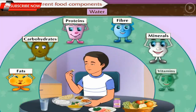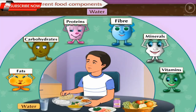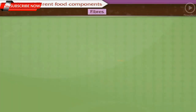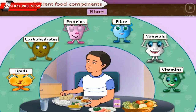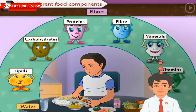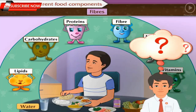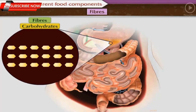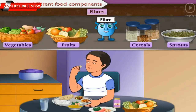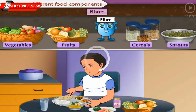Fibers are also an essential nutrient and are carbohydrates, but unlike other carbohydrates, our body cannot digest them. They are very helpful in the digestion of other substances and help in moving undigested food along. Therefore, we should always include leafy vegetables, fruits, and cereals in our daily diet as they are good sources of fiber.